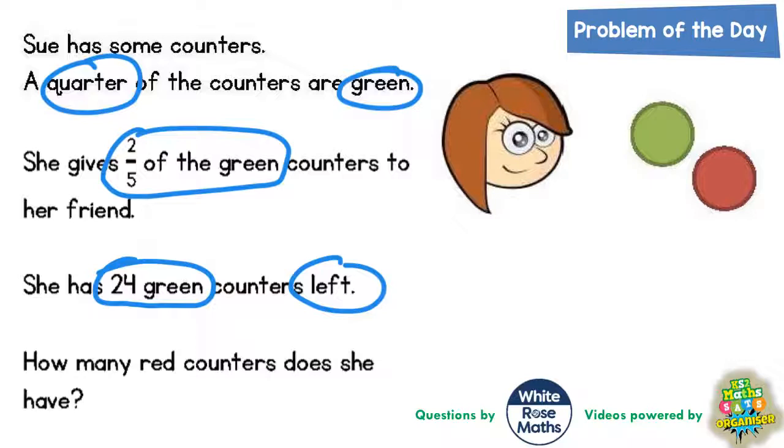Well the way to tackle this question is with a bar model. Now in the first clue of the question we're talking about a quarter of the counters being green. So the first thing we should do is split the bar model into quarters.